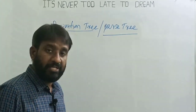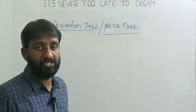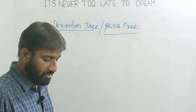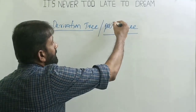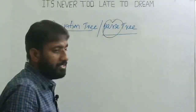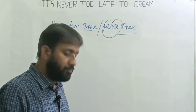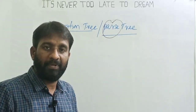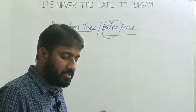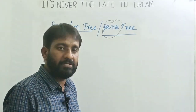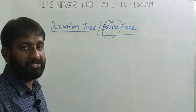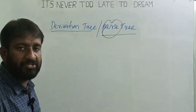Welcome back. Last lecture we completed leftmost derivation and rightmost derivation. Now let's see what is meant by derivation tree. Another name for the derivation tree is the parse tree. This tree is used to parse the input string in the compiler. The compiler has a lexical analyzer and syntax analyzer — the other name for the syntax analyzer is parser. The parser parses the input string using this parse tree, which is why it is termed the parse tree. You can also name it as derivation tree.